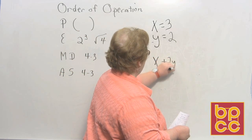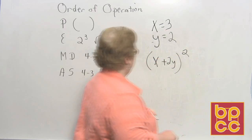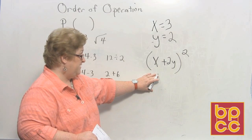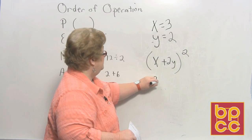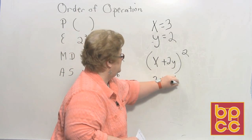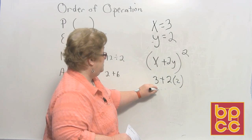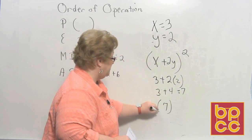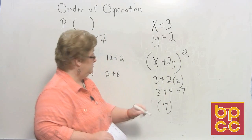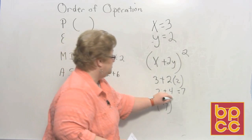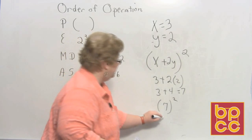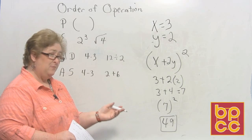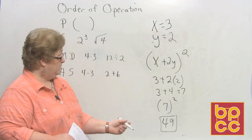x plus 2y in parentheses squared. Now we're going to sub in those values, but we also have to use order of operation. So first, I'm going to sub in the values. Here we go. x is 3 plus 2 times 2, and 3 plus 4 is equal to 7. Now we have 7 in parentheses, which needs to be squared, because we wait to do the square after we've done what's in parentheses. So that's 7 squared. And 7 squared is 49. So we subbed in the x and y value in the problem. We used order of operation to complete our assignment.